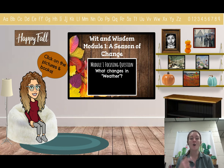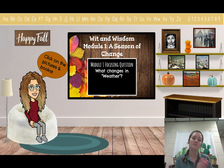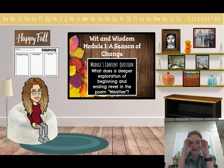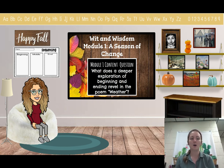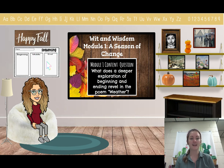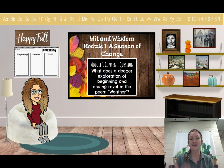That poem we introduced yesterday, we're going to be talking about it more today. We're going to talk about what changes, what differences happen between the beginning, the middle, and the end. Here's our pizza bite question: what does a deep exploration of beginning and ending reveal in the poem "Weather"? A deep exploration means we are looking at all the important parts — not characters or setting like a story, but what happens at the beginning, middle, and end.